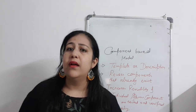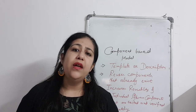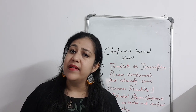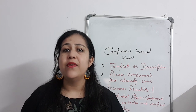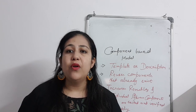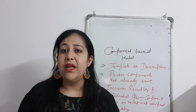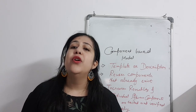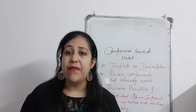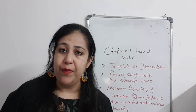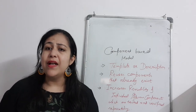For example, I have to make something regarding desktop publishing, and I have some already designed components — some printing-related, some editing-related — and I combine them to create a big software. That would be a component-based model. This is a very simple model because many things are already made. The individual modules are already created, tested, and verified, so we know they are working properly. Our work here is simply to merge them and make a big software.